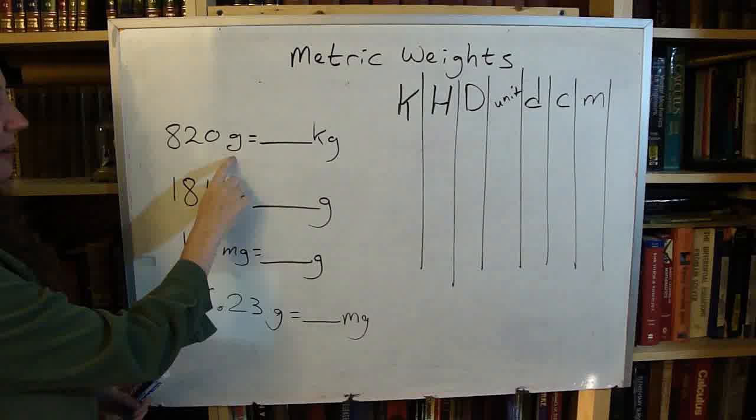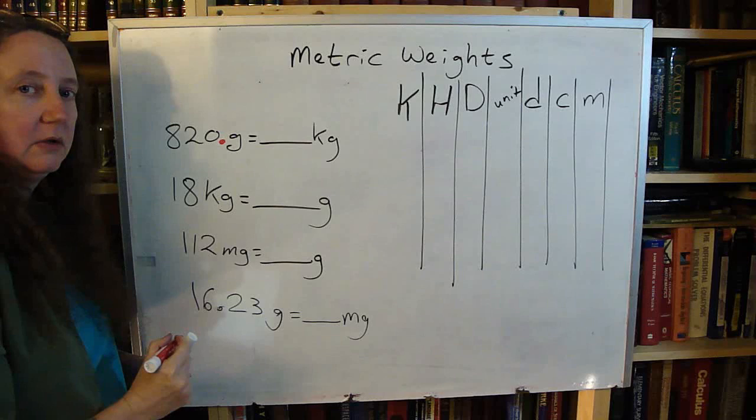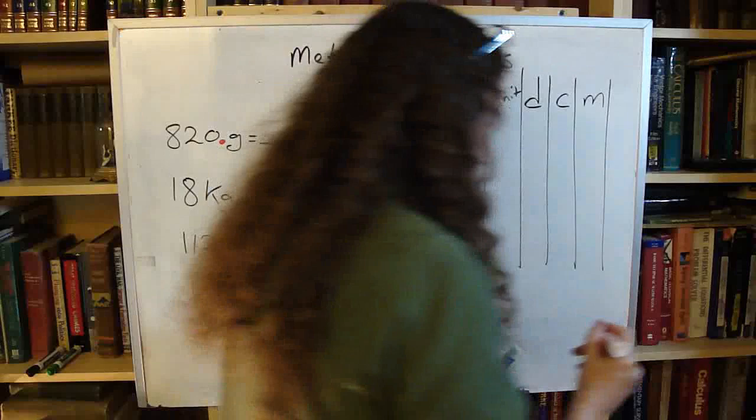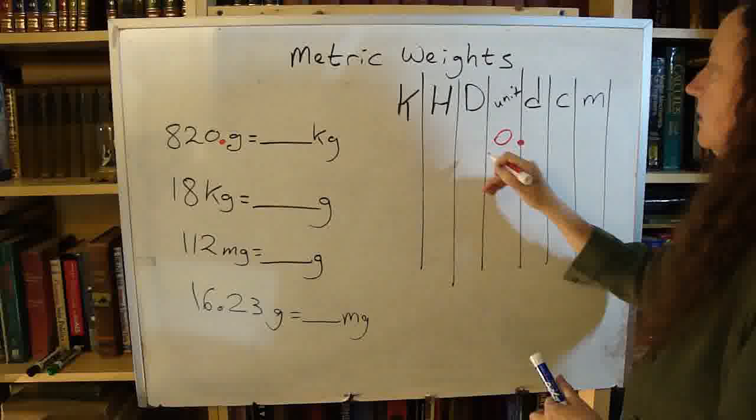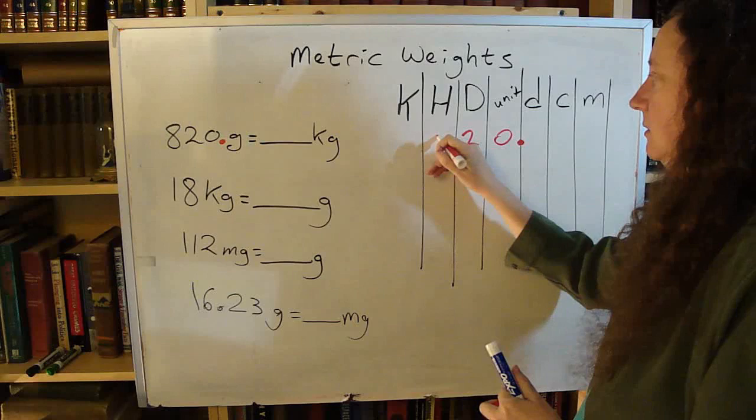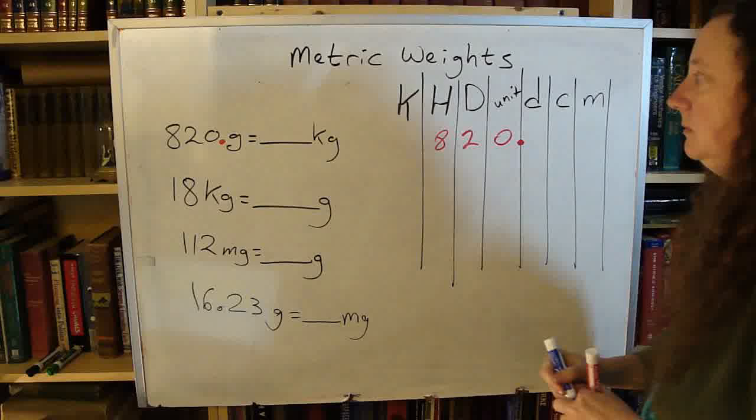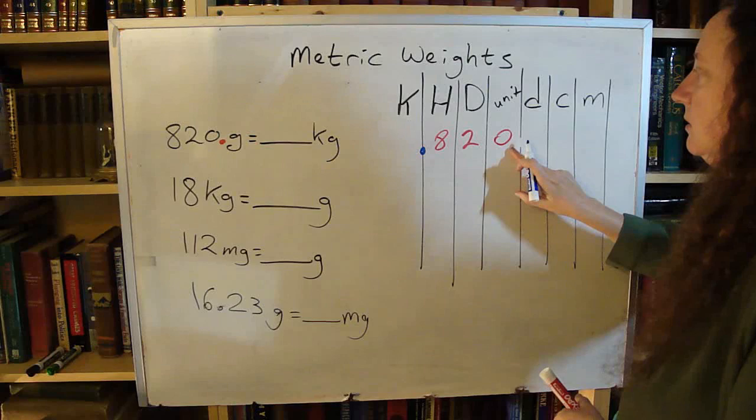We have grams here. We want to go to kilograms. The first thing I need to do is find where is my decimal point. I want that decimal point to be at the end of the grams column, the unit column. So I bring that over here, and what's in front of the decimal point I want in front of the decimal point - one number per column. I need to move my decimal point to the kilogram column. So there's my kilo, put it at the end of the column, get rid of my old decimal point, and there is my answer.